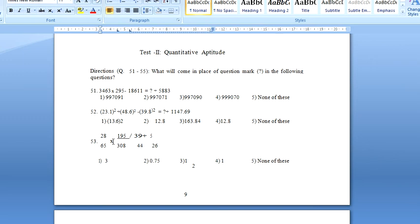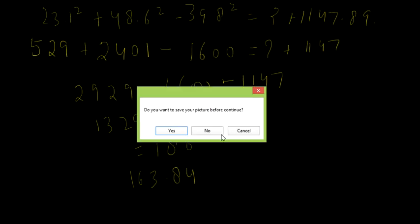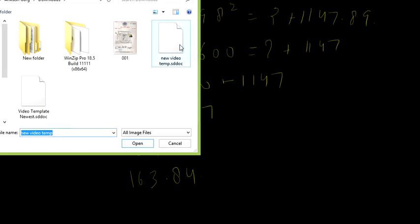Now the third question is 28 by 65 into 195 by 308 divided by 39 by 44 plus 5 by 26. I'll again open a new sheet. So now the next question is 28 divided by 65 into 195 divided by 308 divided by 39 by 44.